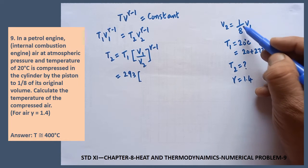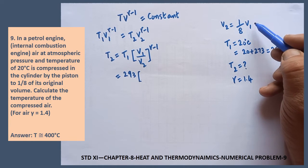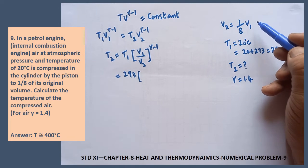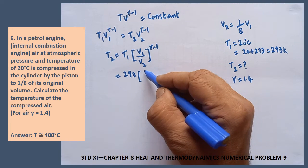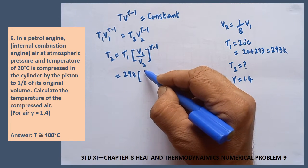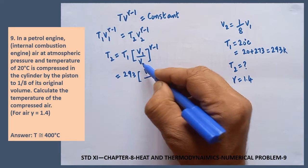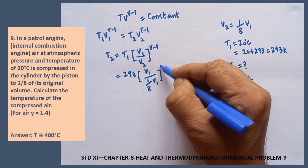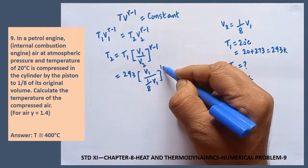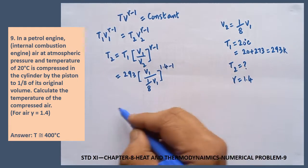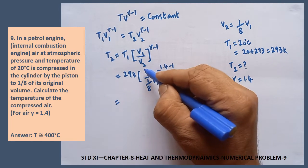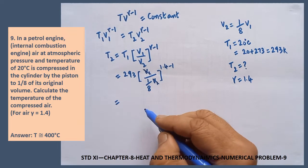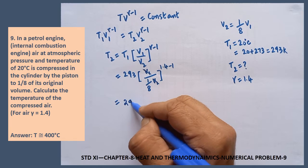After compression, the new volume is 1 8th of the original volume. So substitute here, V1 divided by, instead of V2 substitute, 1 by 8th of V1, gamma minus 1. Instead of gamma, 1.4 minus 1 can be written. V1 can be cancelled.